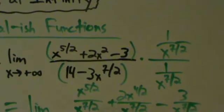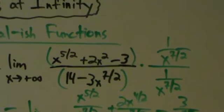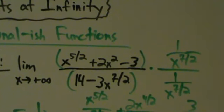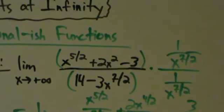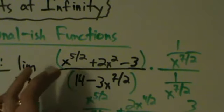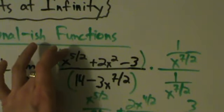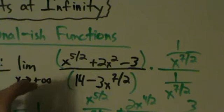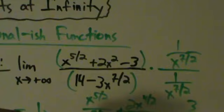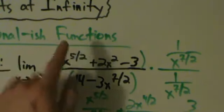So how does the shortcut confirm that? The shortcut for rational functions says if the degree of the top is less than the degree of the bottom, the limit is 0. We can't talk about degrees here because these aren't polynomials, but we can talk about highest powers of x. The highest power of x on top is 5 halves, and the highest power on the bottom is 7 halves. Since the bottom's highest power is larger, the bottom grows much more quickly, and therefore the limit is 0 — which is exactly what we got.